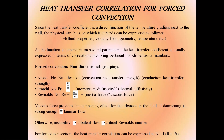The heat transfer coefficient is a direct function of the temperature gradient next to the wall. It depends on fluid properties, velocity field, geometry, and temperature. The heat transfer coefficient is usually expressed in terms of correlations involving pertinent non-dimensional numbers. The Nusselt number Nu is defined as Hx/K, the ratio of convection to conduction heat transfer strength. The Prandtl number Pr is defined as ν/α, momentum diffusivity upon thermal diffusivity. The Reynolds number Re is defined as ρUL/μ, the ratio of inertia force to viscous force.